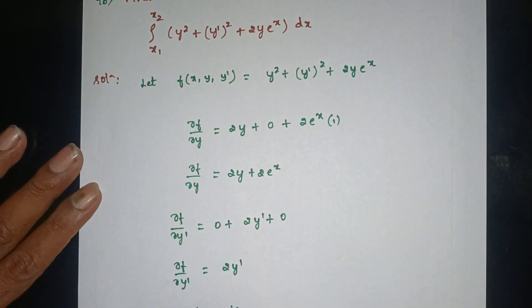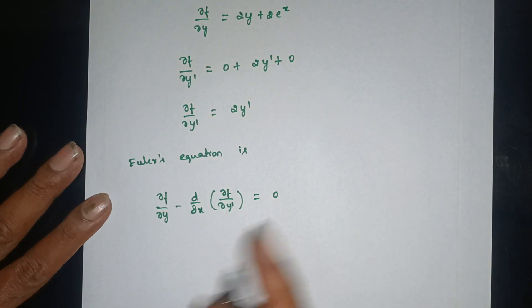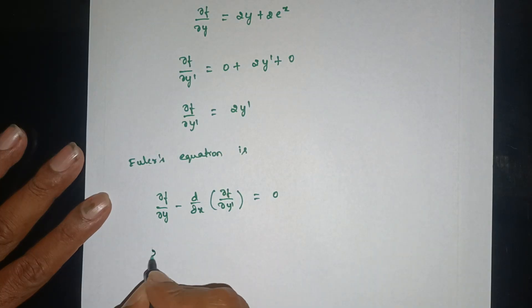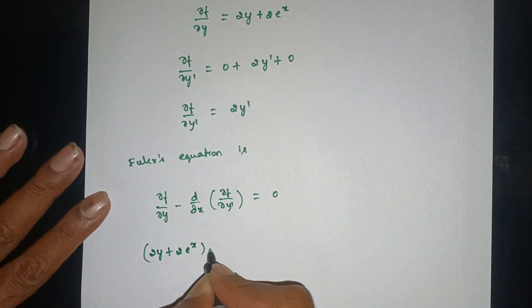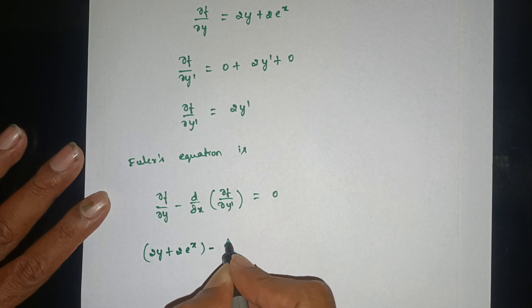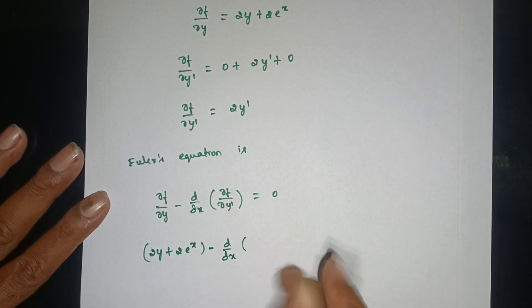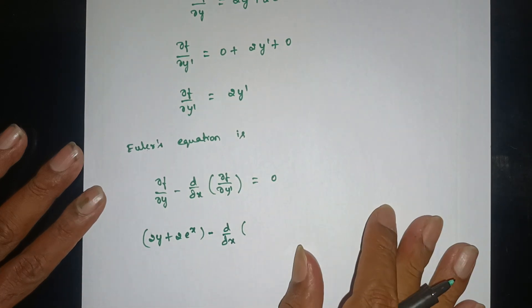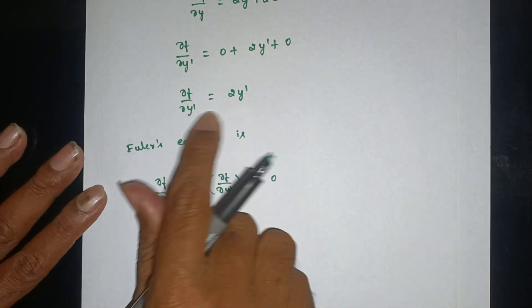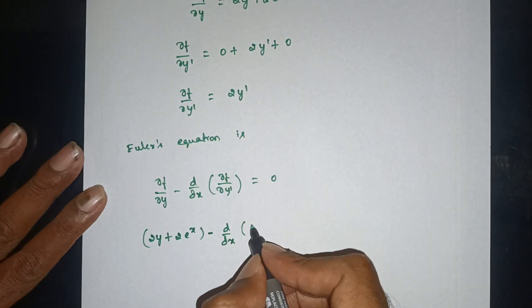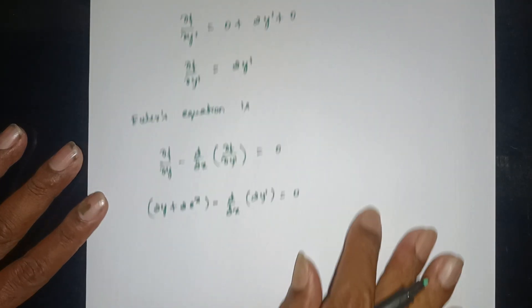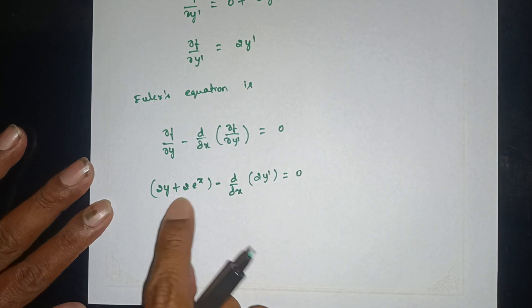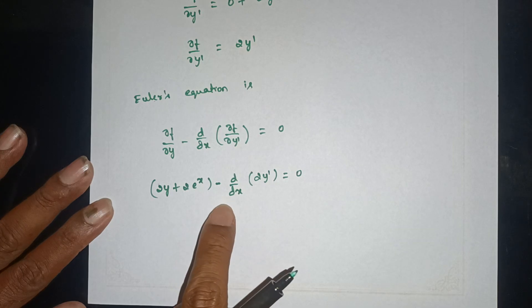Substituting: dou f by dou y is 2y plus 2e to the power x, minus d by dx of dou f by dou y-dash, which is 2y-dash. This is equal to zero.